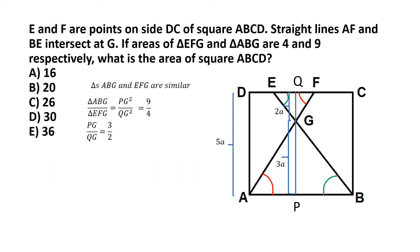And if AD is 5a, and since ABCD is a square, the adjacent side AB should also be equal to 5a. So now consider triangle ABG. What is the area of triangle ABG?